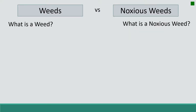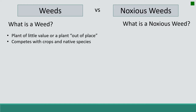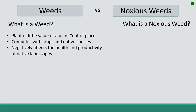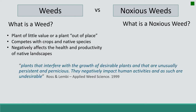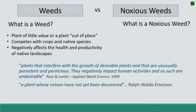In natural resources, we often hear the terms weeds and noxious weeds, and we need to understand the difference. A weed is a plant of little value or any plant that's out of place. It often competes with crops and native plants and can affect the health and productivity of native landscapes. Here's a definition from the Applied Weed Science Society, and here's one from Ralph Waldo Emerson, which I really like: 'A weed is a plant whose virtues have not yet been discovered.' So sometimes when we're dealing with weeds, maybe we just haven't discovered all the virtues.